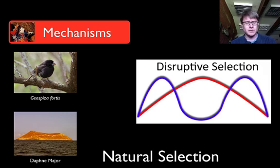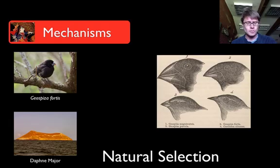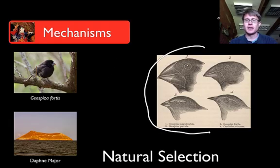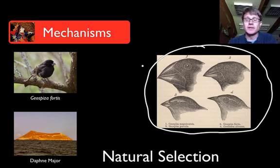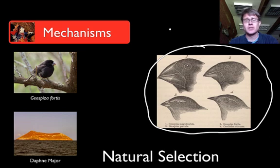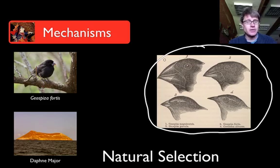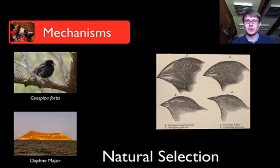We can also have disruptive selection, which happens when you have a bell-shaped curve of a trait that somehow gets split in the middle. An example is the finches on the Galapagos — this picture is actually from Darwin's book. All 14 species on the Galapagos islands started from one ancestral finch population that flew there maybe two to three million years ago, and came to be through disruptive selection. If they start feeding on different seeds, you eventually get two different species that quit interbreeding. My favorite is the vampire finch, which actually sucks blood off the blue-footed boobies.